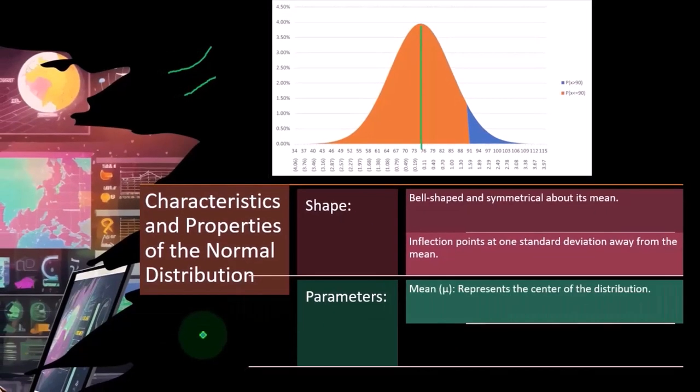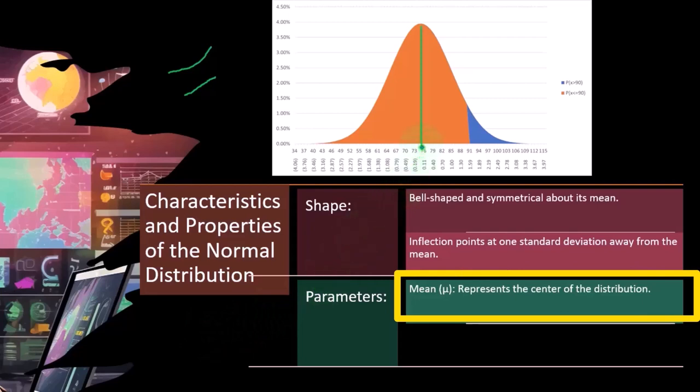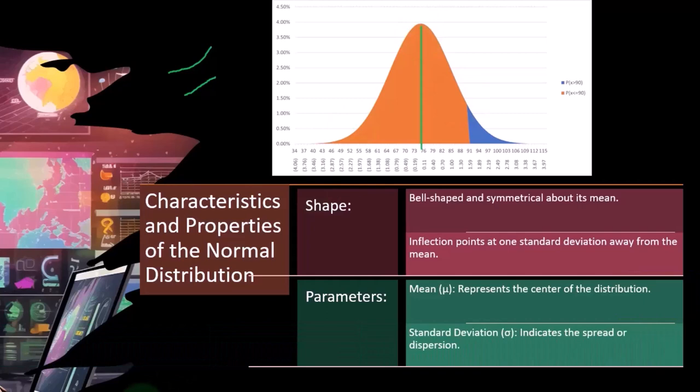Parameters. So the mean, which we can represent with the Greek letter mu, represents the center of the distribution. So that's always going to be the center point where you have the highest peak of the distribution.